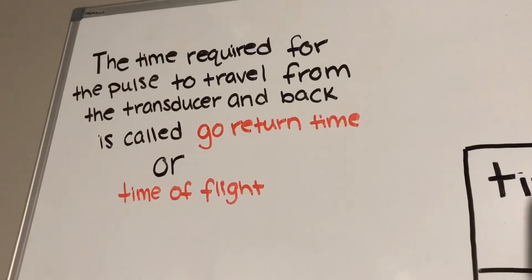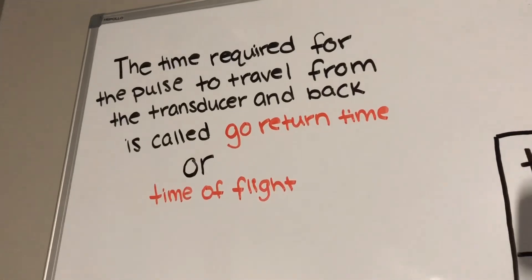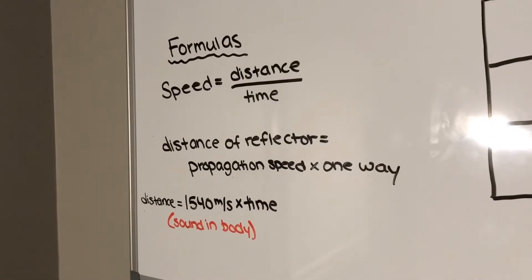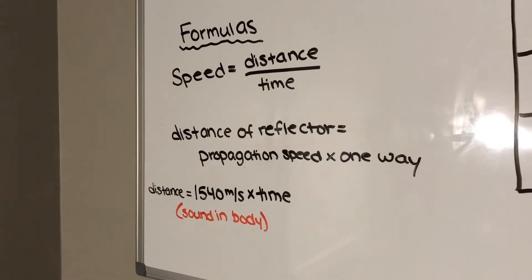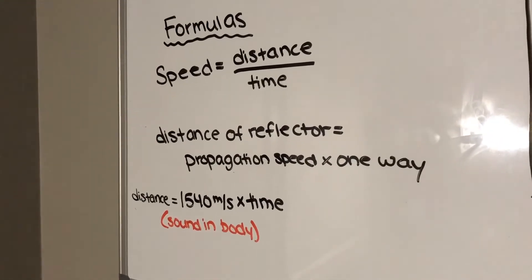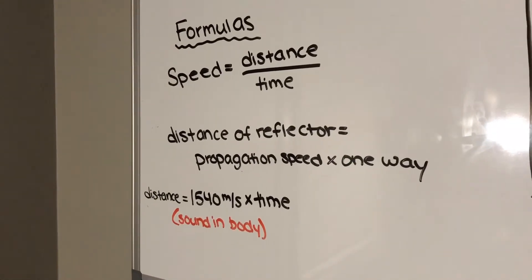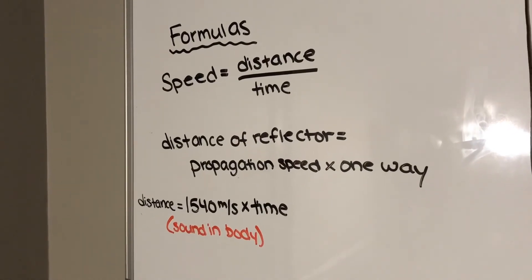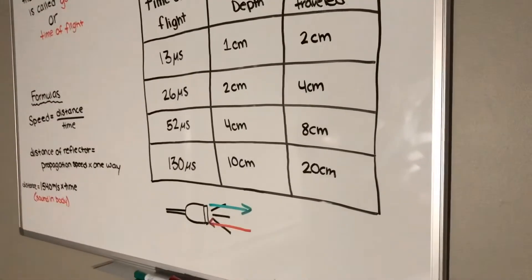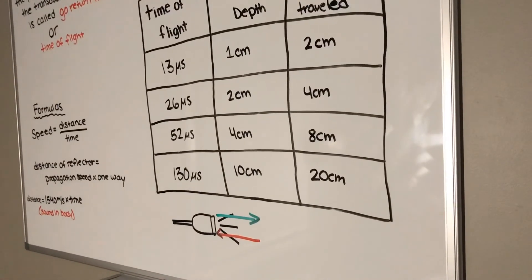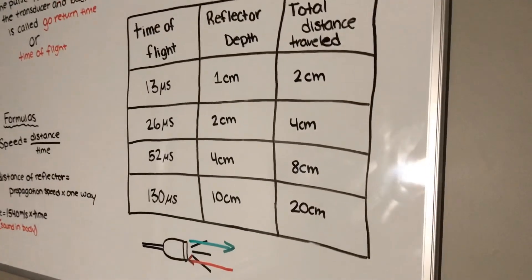The time required for the pulse to travel from the transducer and back is called go-return time, or time of flight. The formulas you want to know for this chapter is speed equals distance over time, distance of the reflector is equal to propagation speed times one way, and distance equals 1540 meters per second times time, and that is the sound in the body. In soft tissue, every 13 microseconds of go-return time means the reflector is one centimeter deep in the body.